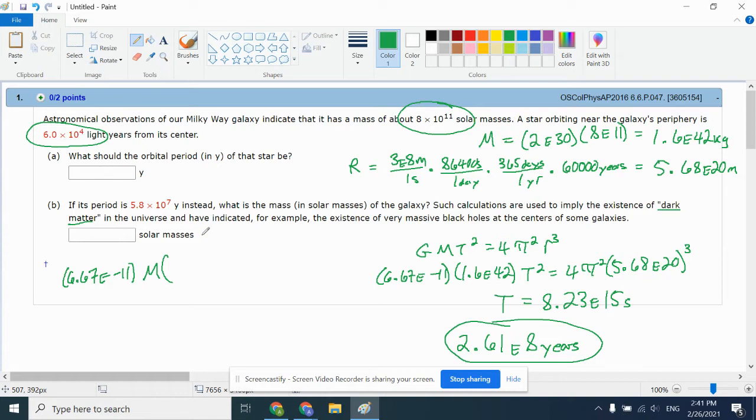I'm going to take the 5.8E7 years and multiply it by 365, that tells me how many days. Multiply it again by 86,400, that tells me how many seconds. I get 1.83E15 seconds. Don't forget to square it. That will equal 4 pi squared R cubed. R still stays 5.68E20. Again, make sure you put the cube on it.